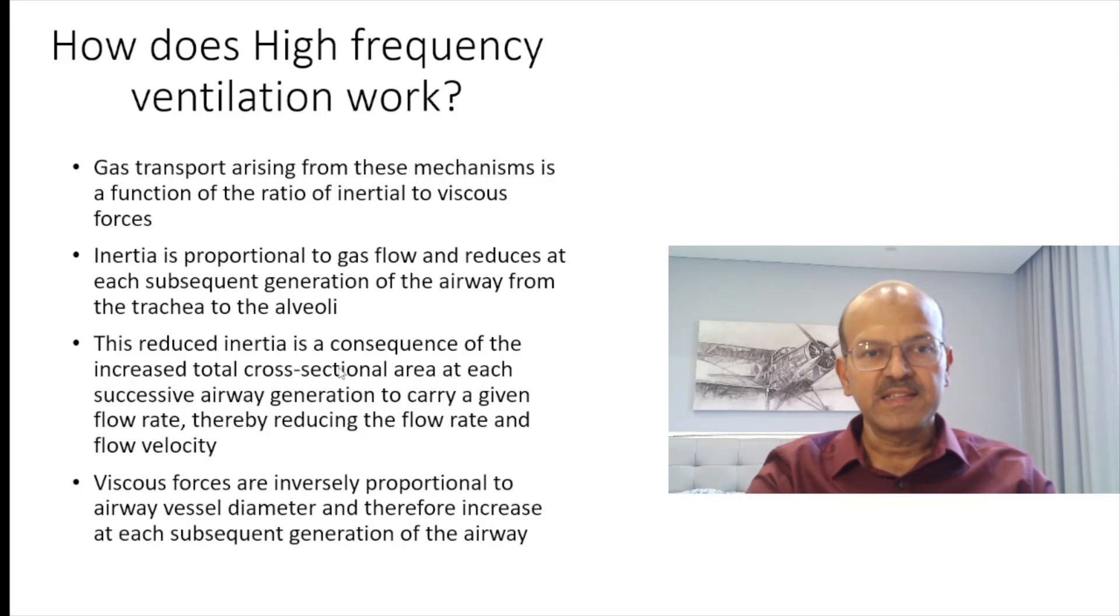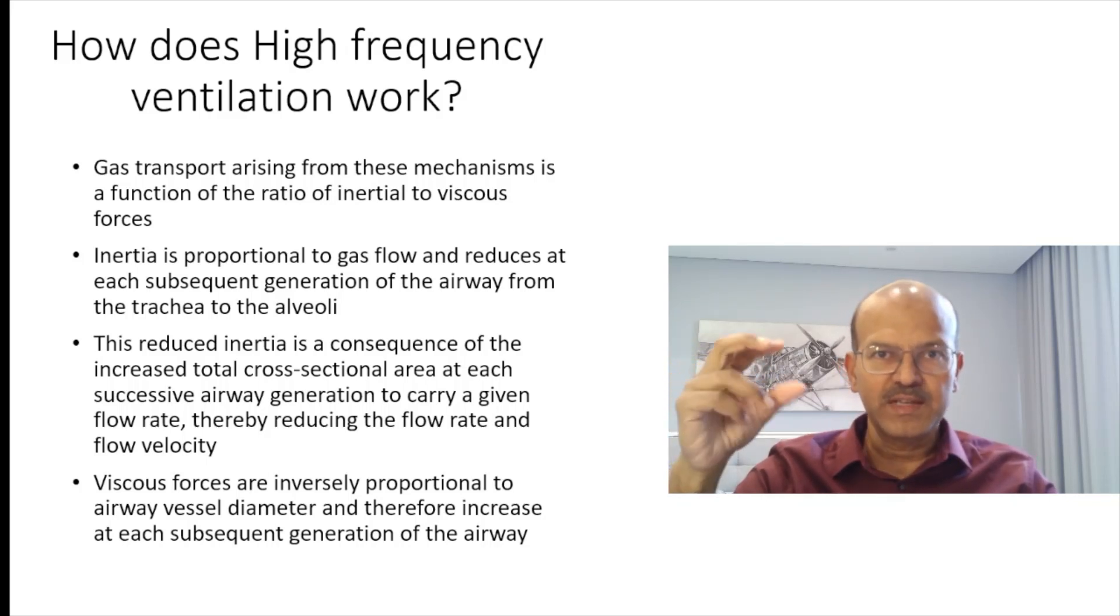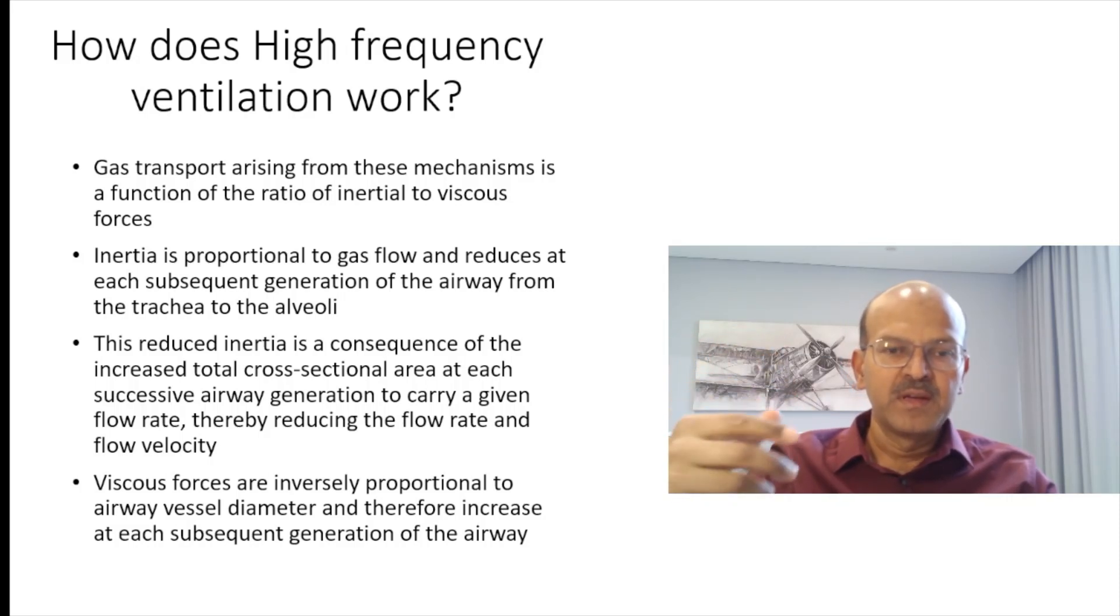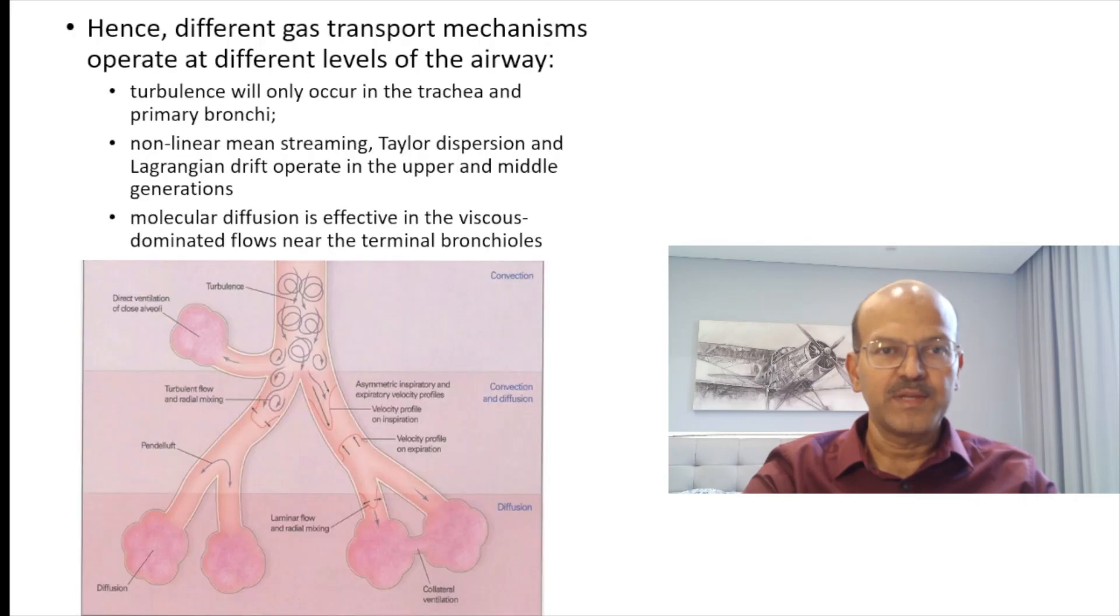The reduction in inertia is because of the increased cross-sectional area as you progress when you go to the smaller bronchioles. For example, there are so many of them so the cross-sectional area increases, so there's more room to go in and the inertia is less. It reduces the flow rate and flow velocity to go into these lower chambers. The viscous forces, on the other hand, are inversely proportional to the airway vessel diameter. The narrower the airway, the higher the viscous resistance, and so this contributes to a greater part in the distal airways.